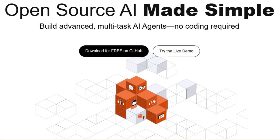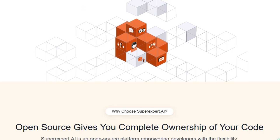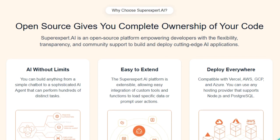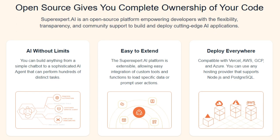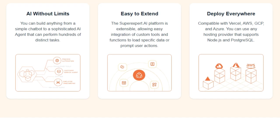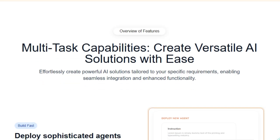What sets SuperExpert.ai apart is its combination of accessibility and extensibility. The platform allows users to build multi-task AI agents effortlessly, thanks to its intuitive interface and simple APIs. Whether you're aiming to create a customer service bot, an employee onboarding system, or a process automation solution, SuperExpert.ai provides the tools to do so efficiently. One standout feature is its support for retrieval augmented generation (RAG), enabling agents to manage document retrieval at scale and provide accurate responses.